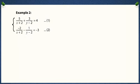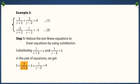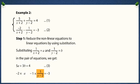Let's look at another example. In this pair of equations, the denominators are made up of expressions that contain variables. Let's look at the steps to reduce non-linear equations to linear equations and then solve them. The first step is to use substitution to convert non-linear equations to linear equations. Here we have substituted 1 upon x plus 2 with a and 1 upon y minus 2 with b. Now we have both equations as a pair of linear equations in two variables.